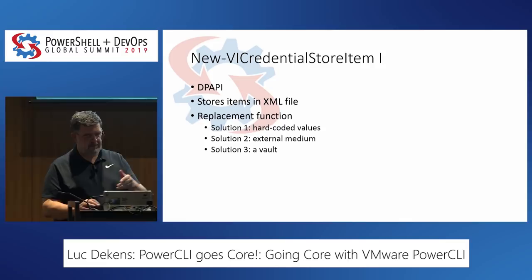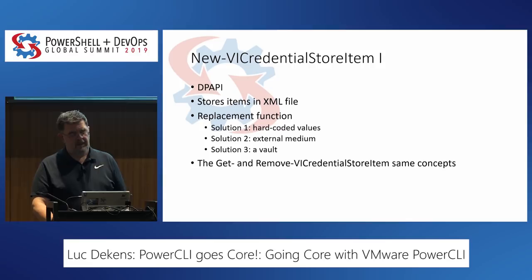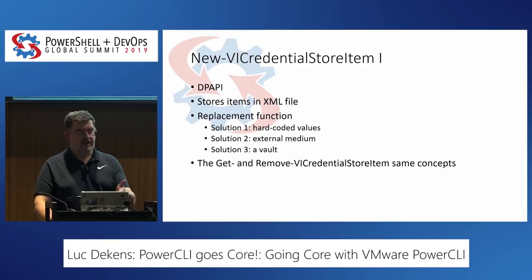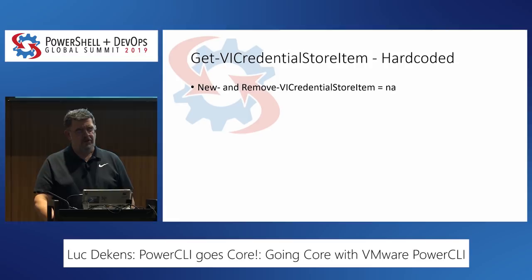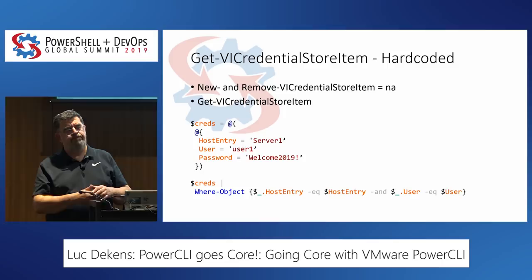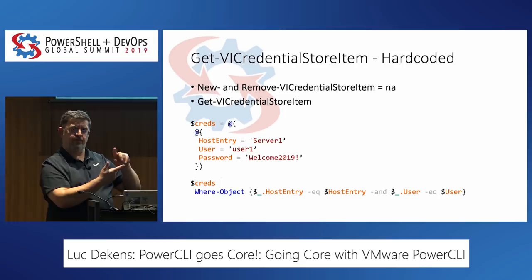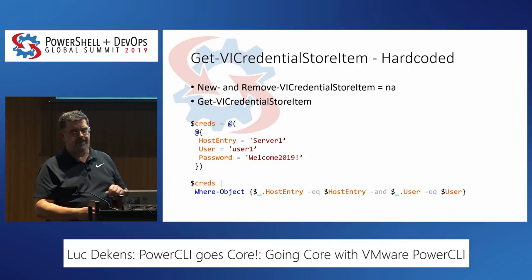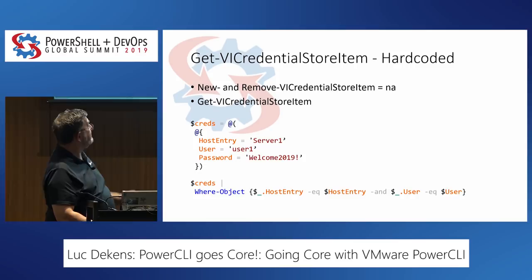The examples I'll show are for New-VICredentialStoreItem, but they're equally valid for Get and Remove. If you have it hard-coded, New and Remove don't really make sense. It's quite simple: you put the credentials — hostname, username, and password — in a hash table or multiple variables inside your function, and then your function returns those values just like Get-VICredentialStoreItem does. That's the easiest but most insecure solution, but it works.